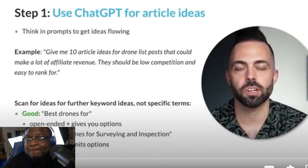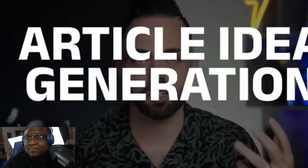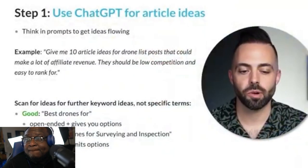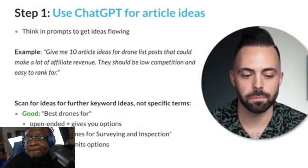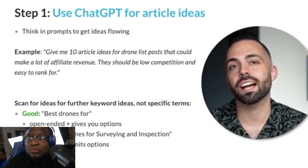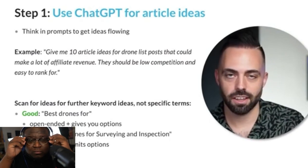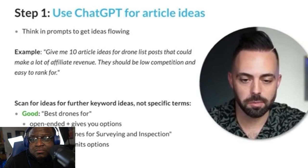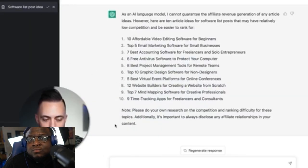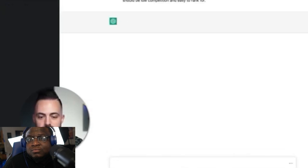Step one is using ChatGPT for article ideas. This is really the article idea generation phase — what kind of content are we going to create, what niche is it in, what's going to make us money? We have to think in terms of prompts to get the ideas going. This is based on different niches, and we can use a tool like Ahrefs in combination with ChatGPT to come up with article ideas that generate a lot of affiliate revenue.